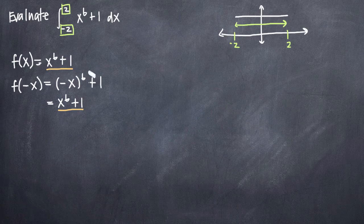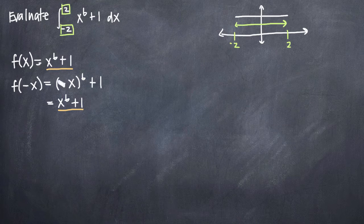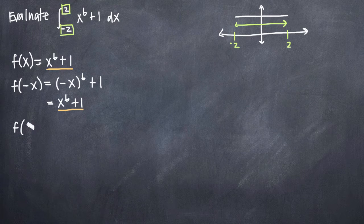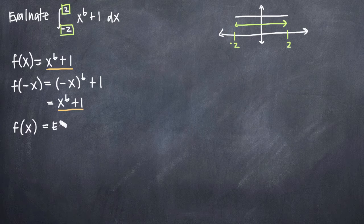So because these two are the same, the original function and the function we got after plugging in negative x, because those two are the same, that means that f of x is even. So we can go ahead and say f of x is an even function.